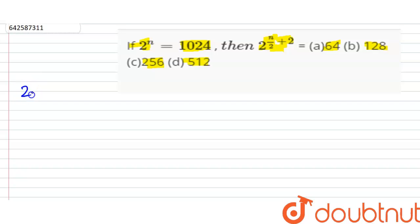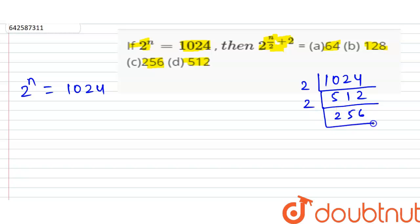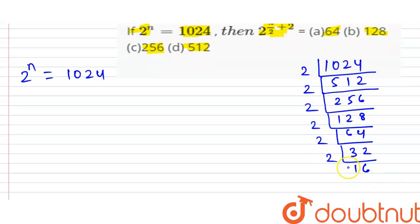What is given in the question: 2 to the power n equals 1024. We will find the factors of 1024 by dividing by 2 repeatedly. 1024 divided by 2 is 512, divided by 2 is 256, divided by 2 is 128, divided by 2 is 64.